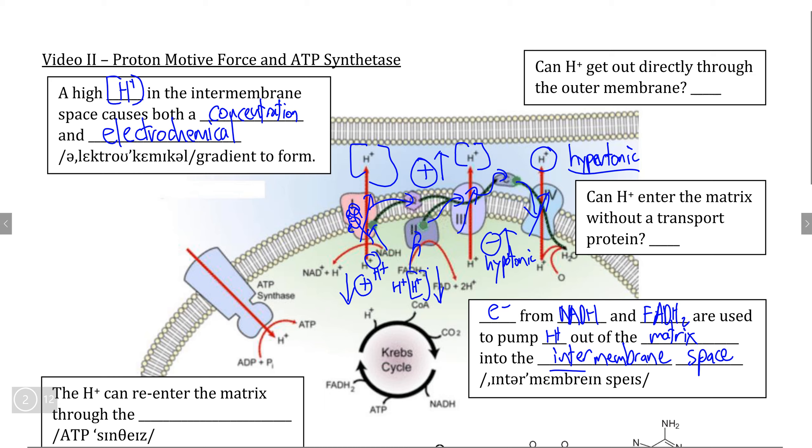What this means is that H plus really wants to come back into the mitochondrial matrix. Firstly, because if you notice in the mitochondrial outer membrane, there aren't actually any channel proteins that H plus can move through, and therefore H plus cannot pass through the outer membrane. But simultaneously, they are not able to pass through the inner membrane either without a specific transport protein.